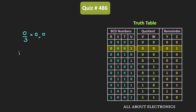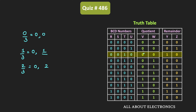In the second case, when input 1 is divided by 3, the quotient will be 0 while the remainder will be 1. That means VW is equal to 00 while YZ is equal to 01. Likewise, in the third case, when 2 is divided by 3, the quotient is once again 0, while the remainder is equal to 2. That means the quotient is 00 while the remainder is 10.